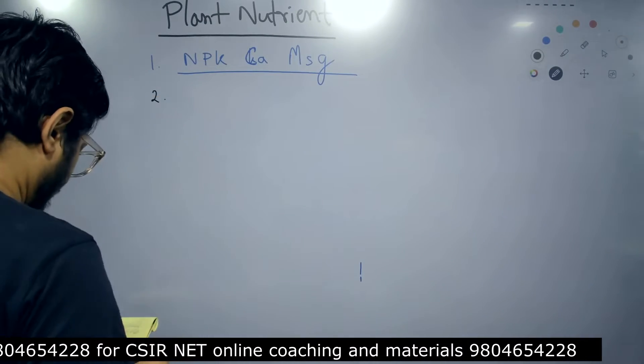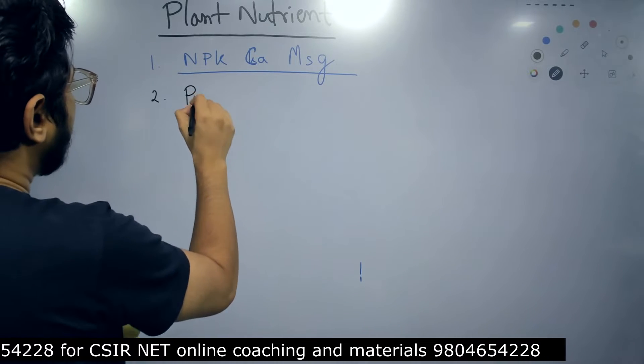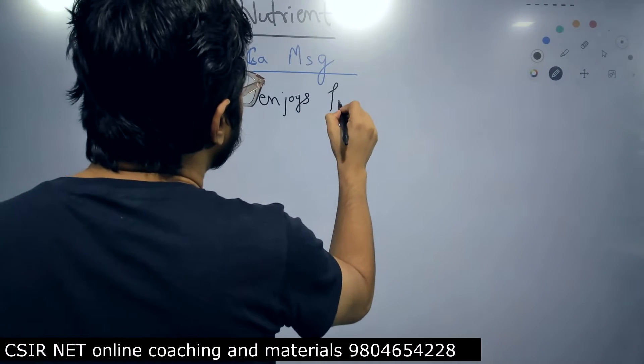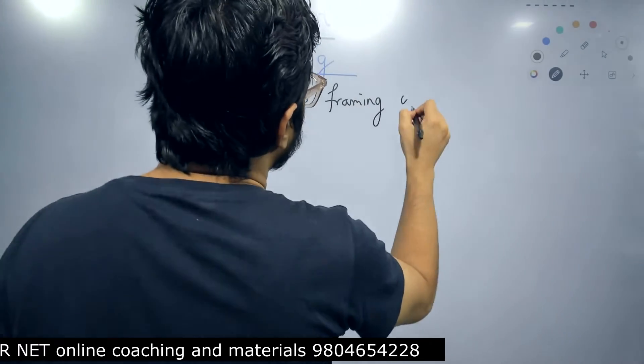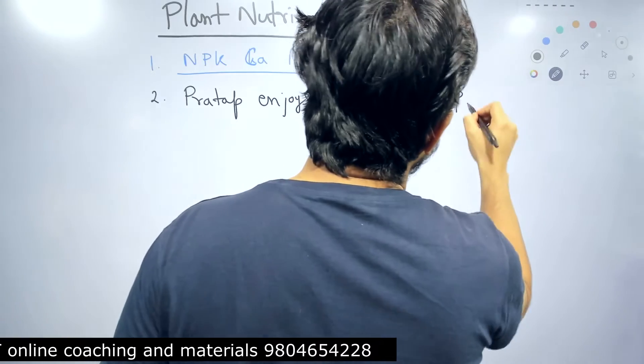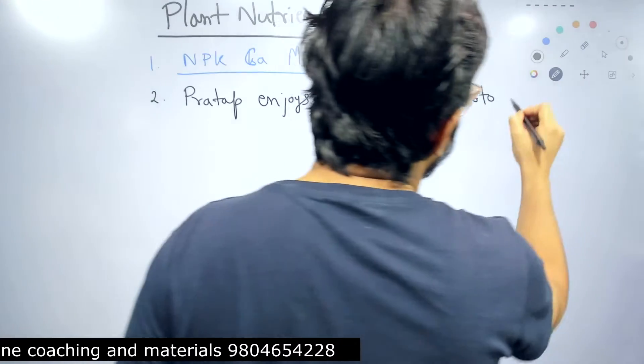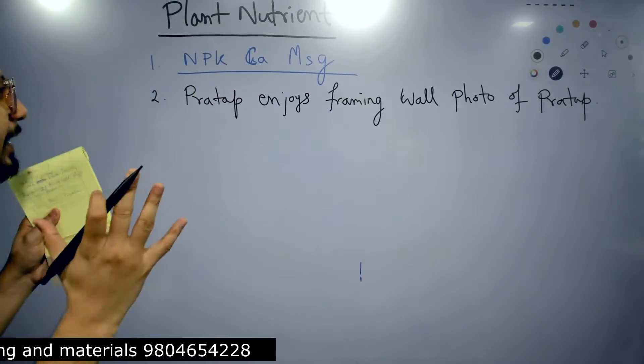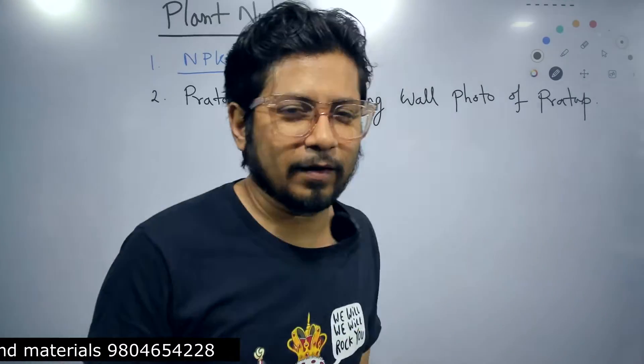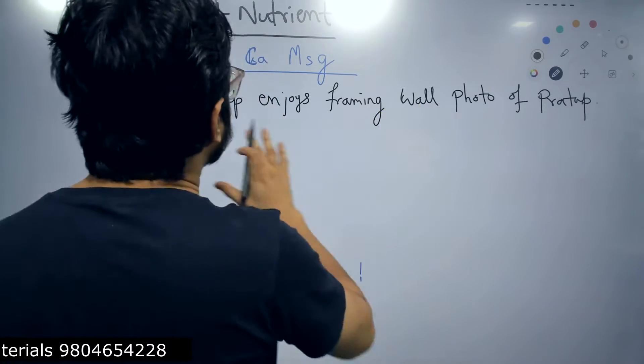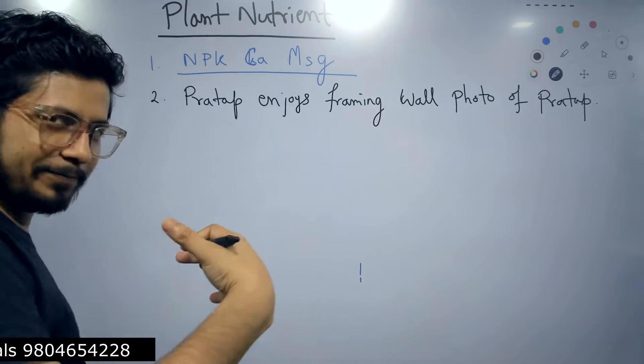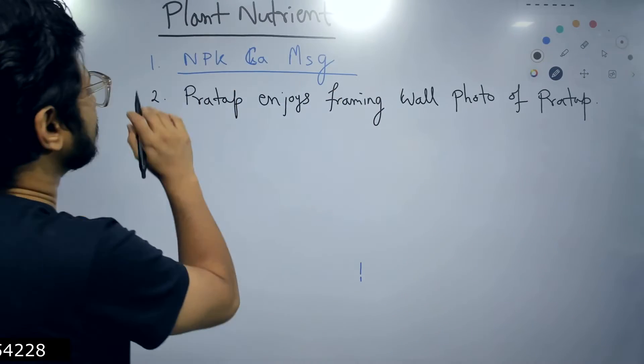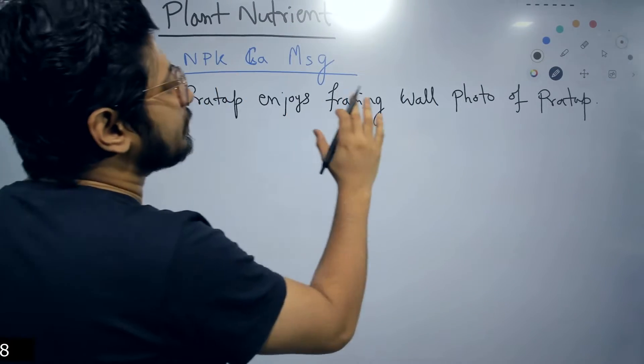And then the second sentence that we have is Pratap enjoys framing wall photo of Pratap. So Pratap is kind of a self-obsessed guy. That's what I remind myself to remember this. So Pratap enjoys framing wall photo of himself, but I write it like Pratap enjoys framing wall photo of Pratap. So Pratap wants to see his own photo laminated and framed and hung to the wall. So two sentences: NPK ka message and Pratap enjoys framing wall photo of Pratap.